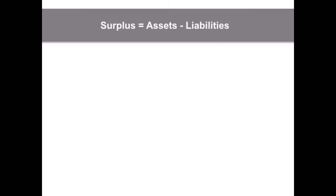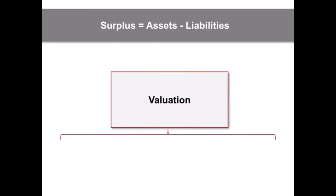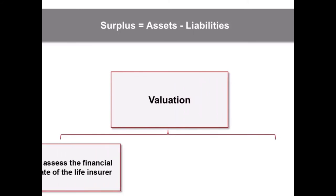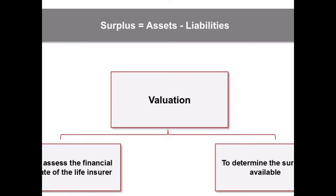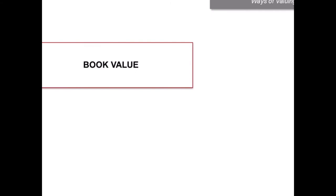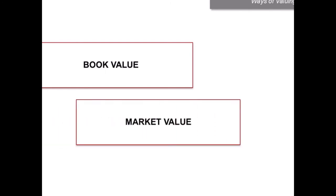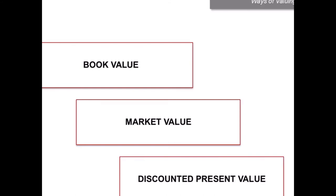Such a valuation has two purposes: first, to assess the financial state of the life insurer — that is, to determine if it is solvent or insolvent; and second, to determine the surplus available for distribution among policyholders or shareholders. The assets can be valued in the following ways: at cost, which is the value at which the life insurer purchased its assets; at market value, which is the worth of the assets in the marketplace; and at discounted present value, which involves estimating the future income stream from assets and discounting them to the present.